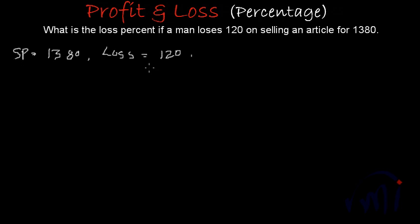So if we can find the cost price, we can find the loss percent. Because the losses or the profits are incurred over the cost price. So the cost price will be actually 120 more than 1380 because in this case we are earning a loss. So cost price when we earn loss is equal to sale price plus loss.